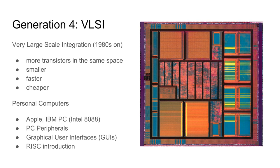Because of VLSI technology, machines became so small and cheap that regular households could own their own computer systems. We see the introduction of personal computers like the original Apple, the Apple IIe, and IBM's PC — originally introduced using a VLSI CPU called the Intel 8088. At the same time we start to see personal computer peripherals, which also have VLSI-based circuitry inside them.